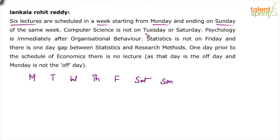The first condition is that Computer Science is not on Tuesday or Saturday. So Computer Science cannot come on Tuesday and it cannot come on Saturday either. Just indicate that in the arrangement so it becomes easy to verify when you are filling up the remaining points.